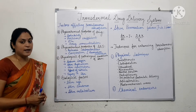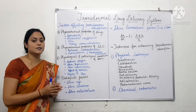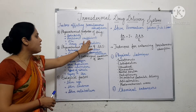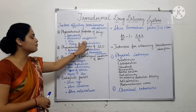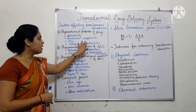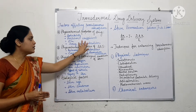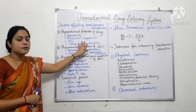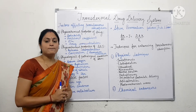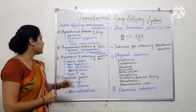Solubility of a drug directly affects percutaneous absorption as it determines the concentration of drug available at the site of application. Partition coefficient can be defined as the fraction of drug in an oily layer to that of an aqueous layer. For a drug to be absorbed through percutaneous absorption, it should have sufficient lipid solubility. The partition coefficient should not be less than one to be absorbed through the lipidic membrane of skin.